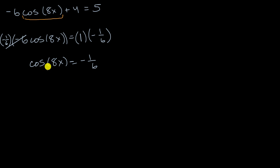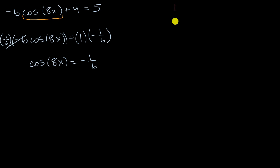If I just keep going, I could take the inverse cosine of negative one sixth, divide by eight, and get a solution. But this is a good time to pause and make sure we are capturing all of the solutions. I'll refresh our memories with some identities, and to help with these, I like to draw a quick unit circle.